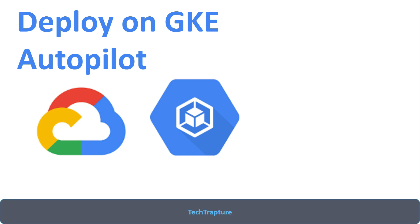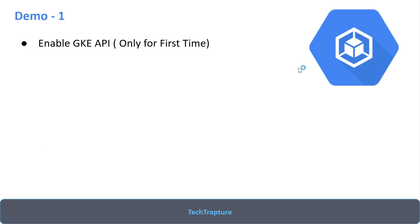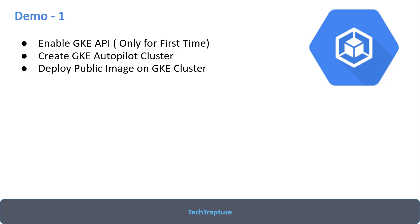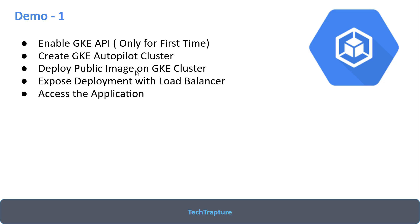Now we are moving ahead. In this video we are going to deploy our first application on an autopilot GKE cluster. We will have two demos. In the first demo, we'll enable the GKE API, create a GKE autopilot cluster, deploy one public image on the GKE cluster, expose that deployment with a load balancer service, and verify if our deployment is working fine.